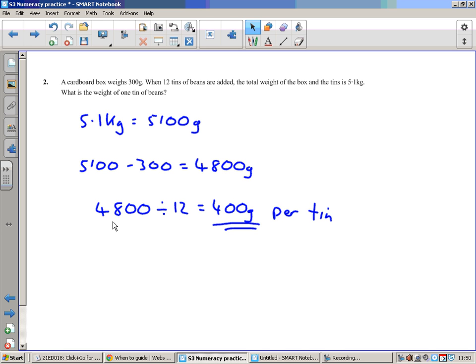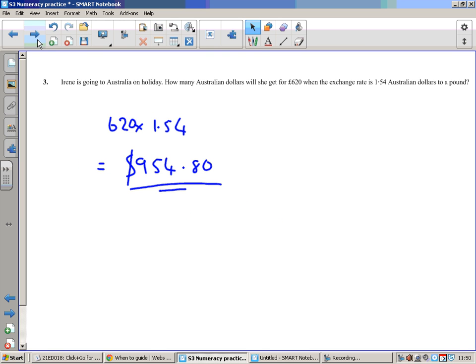Currency conversion: Irene is going to Australia on holiday. How many Australian dollars will she get for £620 if the exchange rate is 1.54 Australian dollars to a pound? That means every pound you've got you get $1.54, so 620 pounds multiplied by 1.54, that gives us how many Australian dollars: $954.80.